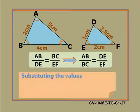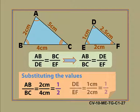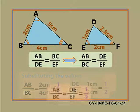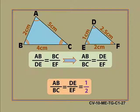Now substituting the values we have 1 by 2 is equal to 1 by 2. This proves that ratios of corresponding sides of similar triangles are always equal.